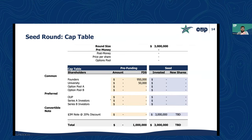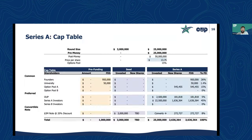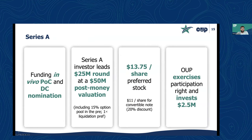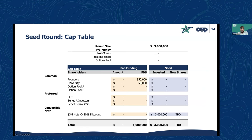Looking at the cap table post-seed: the pre-funding cap table shows founders with 950,000 shares and the university with 50,000 shares — one million total. After adding the convertible note, the $3 million investment appears on the ledger, but the share count for those investors is still TBD because no valuation has been assigned yet. That will be determined when the next round of financing sets a price per share.